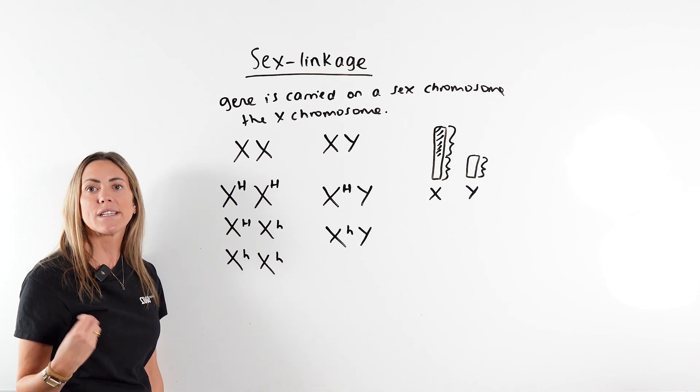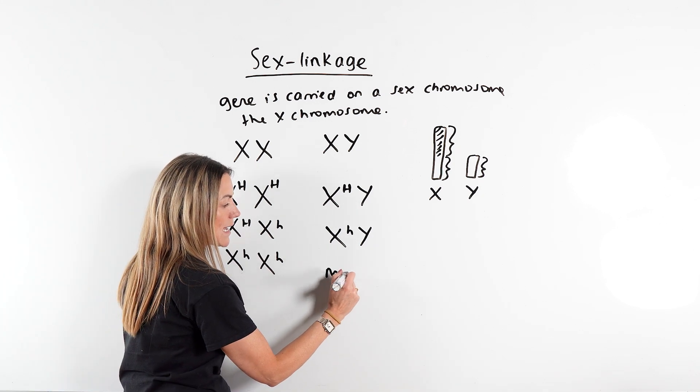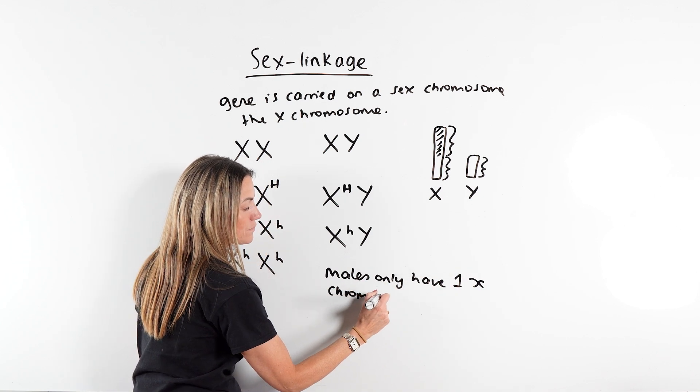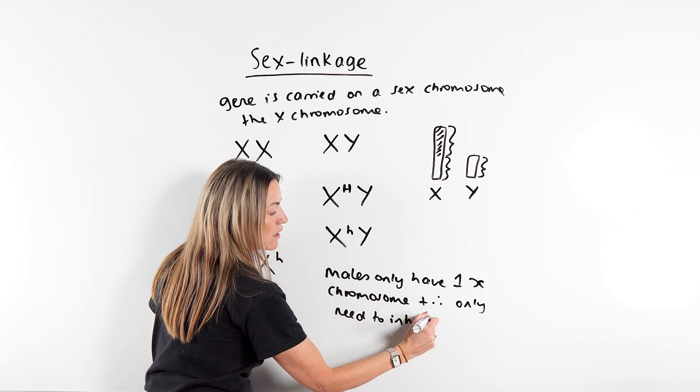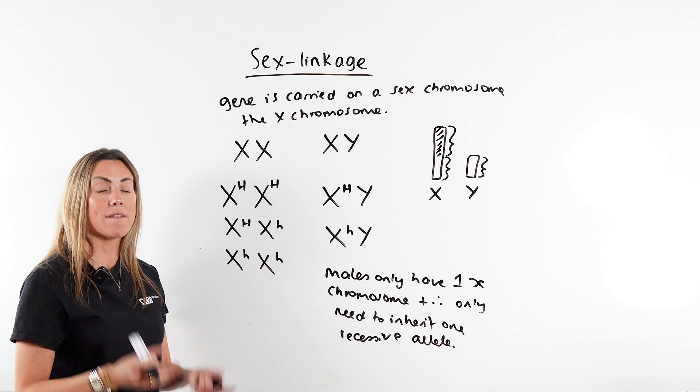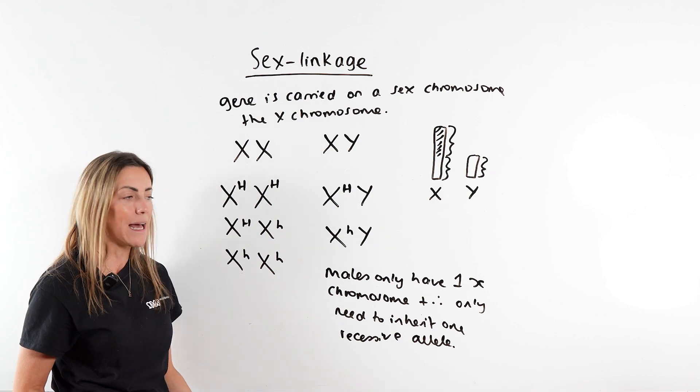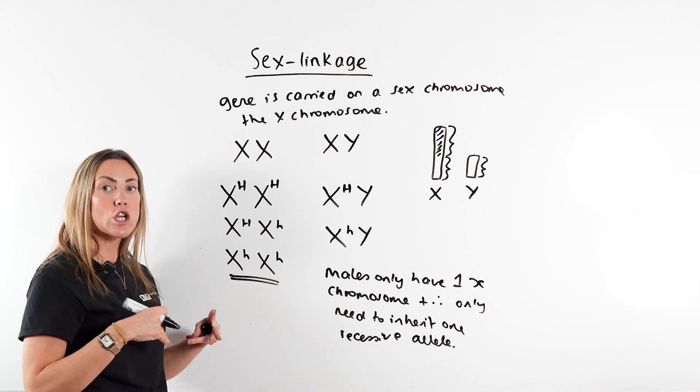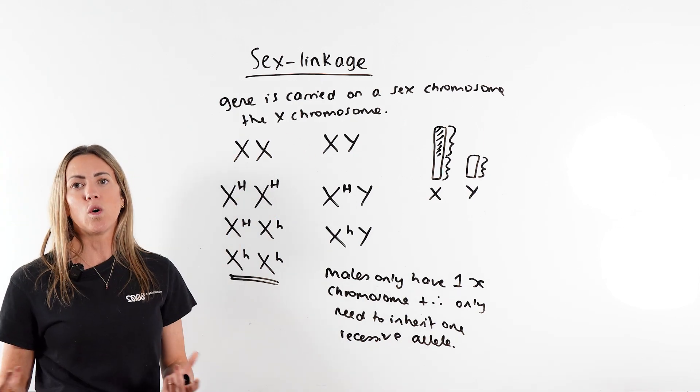And this is why haemophilia and other sex-linked disorders are far more common in males. And you might have to explain that in the exam. You can say things like, males only have one X chromosome and therefore only need to inherit one recessive allele. So if it's a sex-linked disorder that's caused by a recessive allele, and you're asked why is it more common in males like haemophilia or colour blindness? It's because males only have one X chromosome. They only need to inherit one recessive allele. Whereas females have two X chromosomes, therefore they would need to inherit two recessive alleles, one from each parent, in order to have that sex-linked disorder.